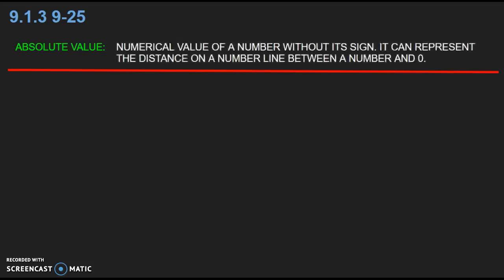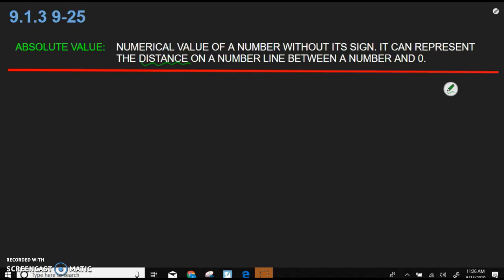Okay, we're back. So the first thing that I want to talk to you about is one vocabulary term and it's about absolute value. We briefly talked about that the first day of unit 10, but just as a quick reminder for you to put on your paper, the absolute value is the numerical value of a number without its sign and it can represent the distance on a number line between a number and 0. So again, pause your video real quick, put your definition of absolute value on your paper and then we will get to problem 25.